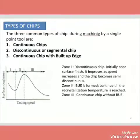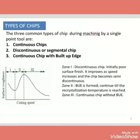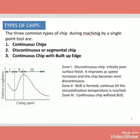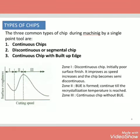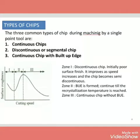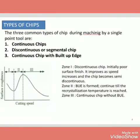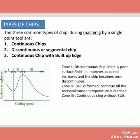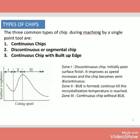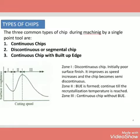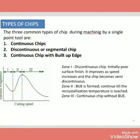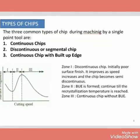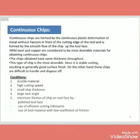Next is the types of chips. There are commonly three types of chips. First is the continuous chip. Second is discontinuous or segmental chips. And third is continuous chip with the built-up edge. A graph is given where the vertical axis represents surface roughness and the horizontal axis represents cutting speed. Zone one is the discontinuous chip, zone two is built-up edge formation, and zone three is continuous chip with built-up edge.